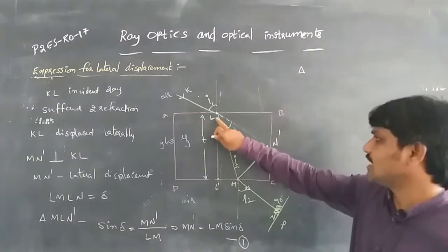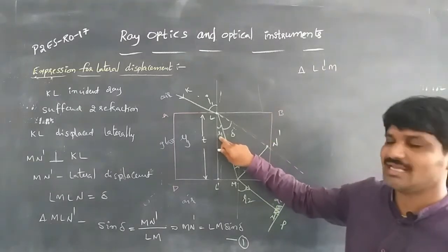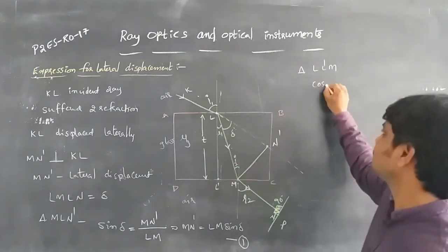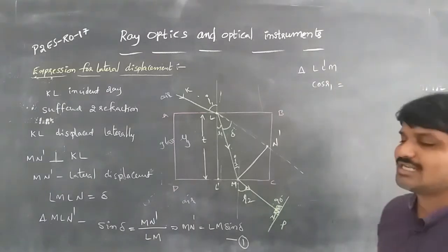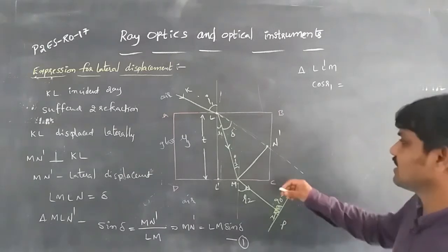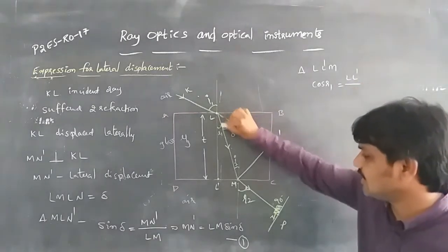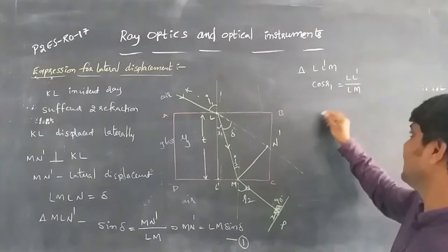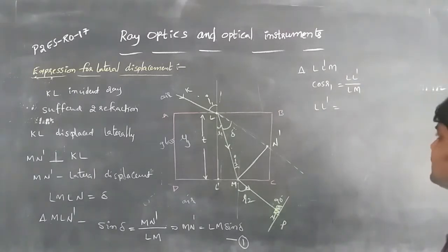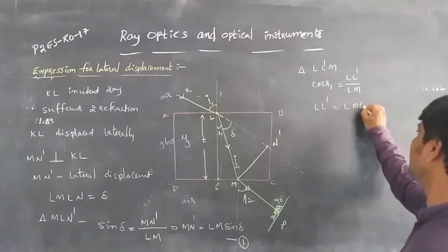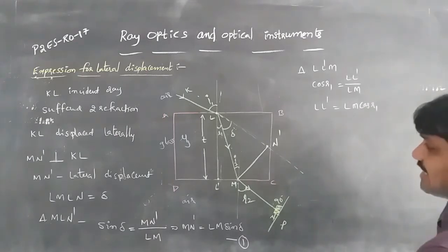From triangle LLdash M, angle R1 is present. So cosR1 equals adjacent over hypotenuse, which is LL dash over LM. Therefore, LL dash equals LM·cosR1.